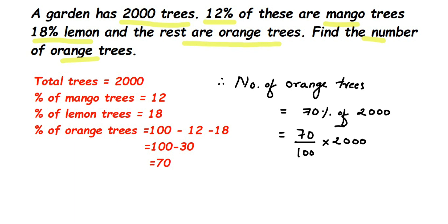We cancel two zeros from both 2000 and 100, giving us 70 multiplied by 20. Seven twos are 14, plus two zeros — so the number of orange trees equals 1400. There are 1400 orange trees in the garden. I hope that's clear; if you have any questions, drop a comment. Thank you for watching!